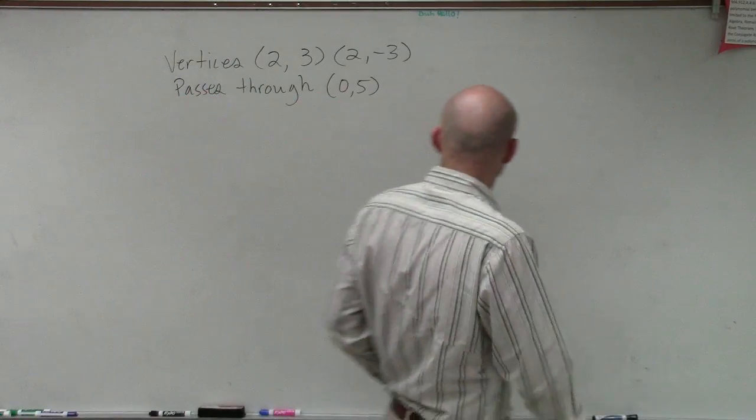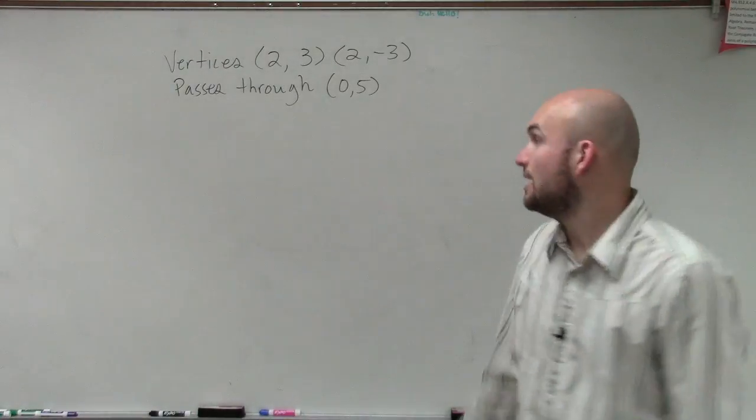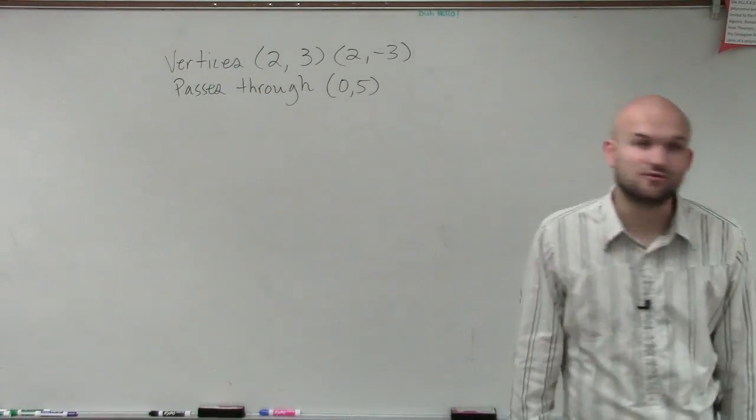On this problem we're given vertices at (2,3) and (2,-3), and then we're given it passes through the point (0,5).